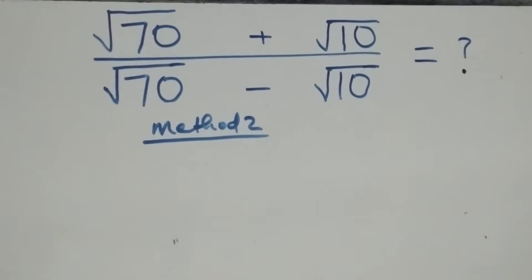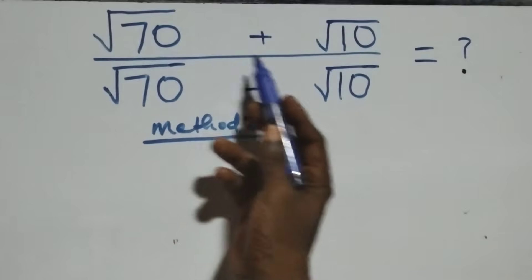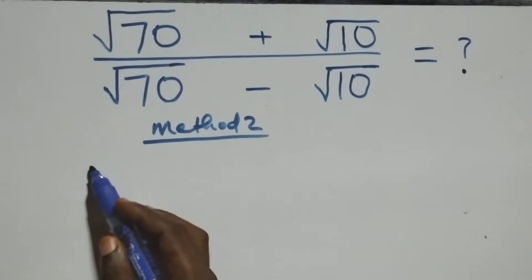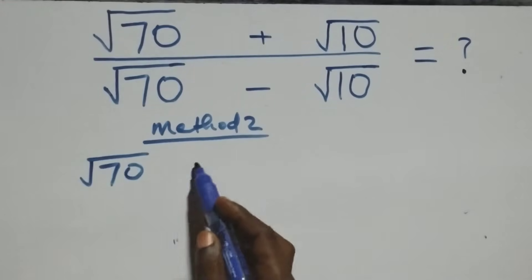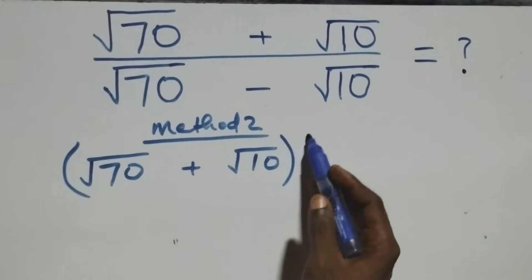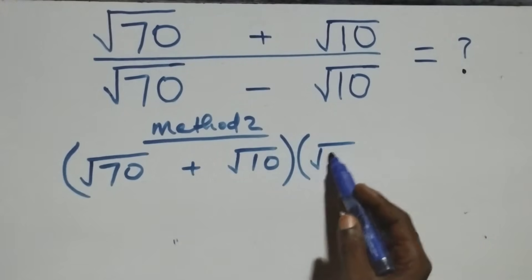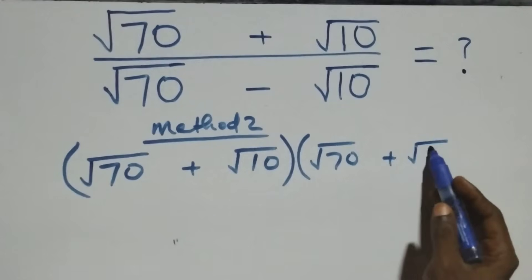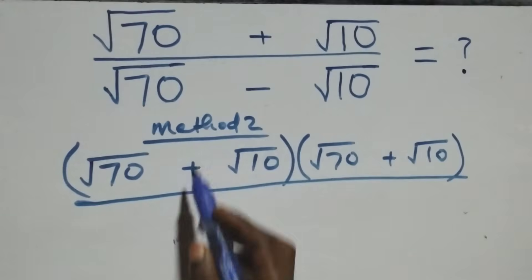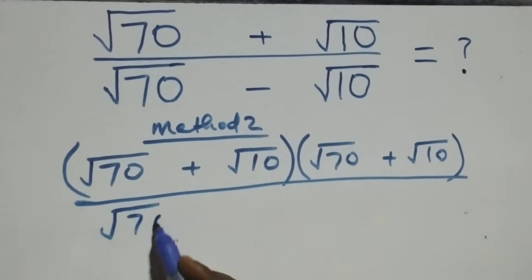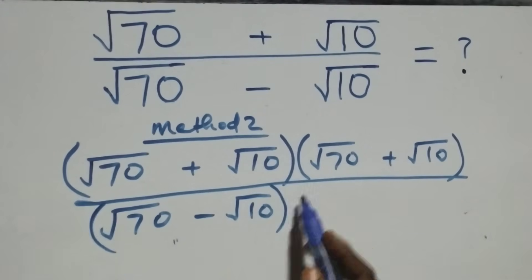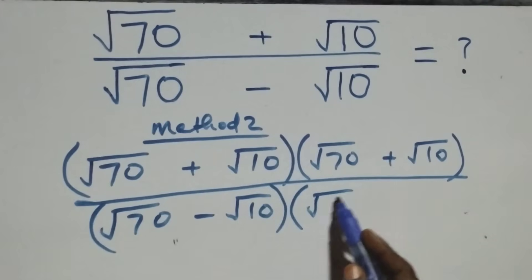Now for the second method: we rationalize the original expression directly by multiplying numerator and denominator by the conjugate of the denominator. So we multiply (√70 + √10) by (√70 + √10), and the denominator (√70 − √10) by (√70 + √10).